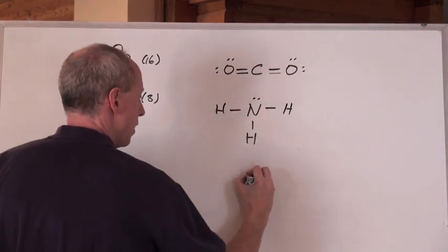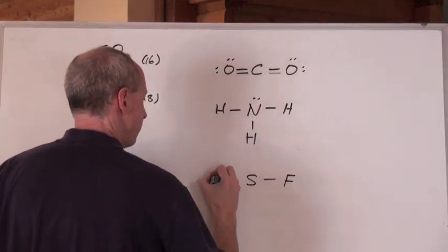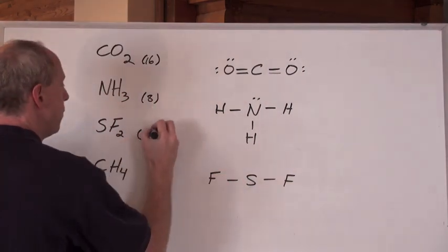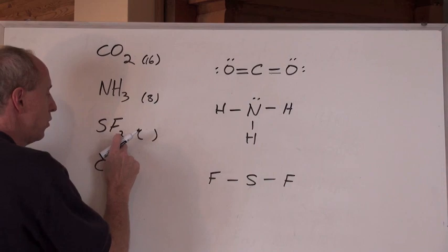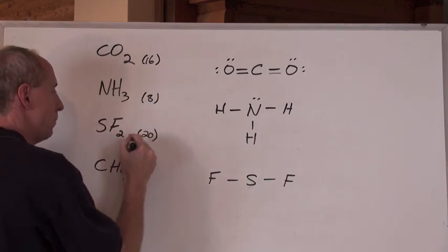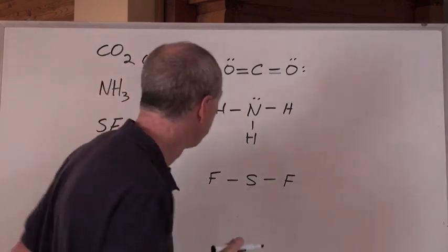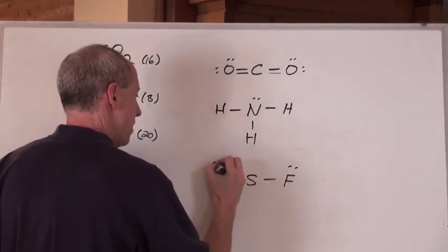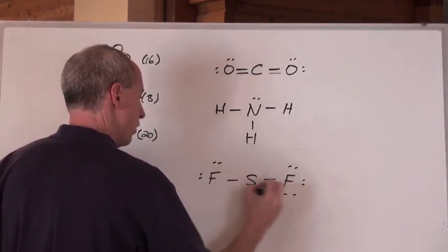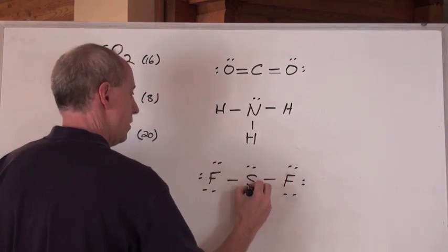SF2. So I go S and I put 2 Fs on there. That's what I do. And now, oh by the way, you better count up the valence electrons. So that's group 7 times 2 is 14 plus 6 is 20. Because that's in group 6 of the periodic table. Okay. So 20, 2, 4, 6, 8, 10, 12, 14, 16, 18, 20.